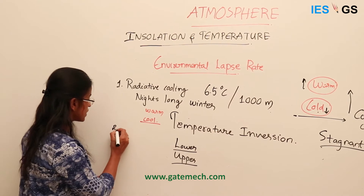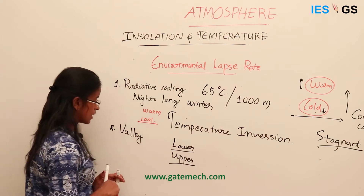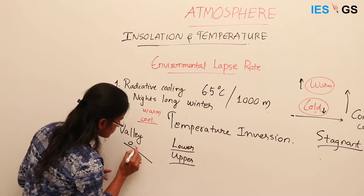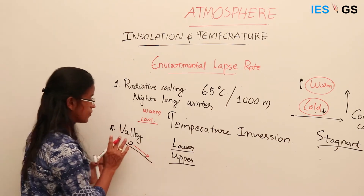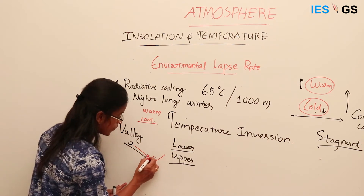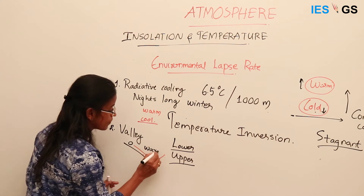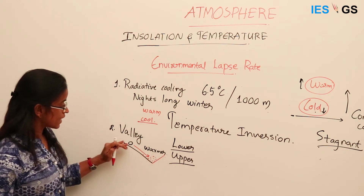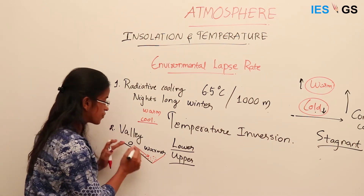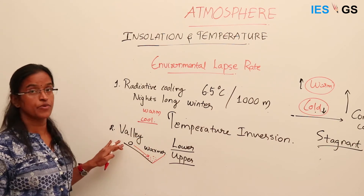Another cause is valley cooling. Cold air may travel down the valley because of its weight, and it tends to stay at the bottom, so warmer air remains on the upper side. This is a drainage of cold wind from uphill to downhill due to topography, and it is common in mountain valleys.